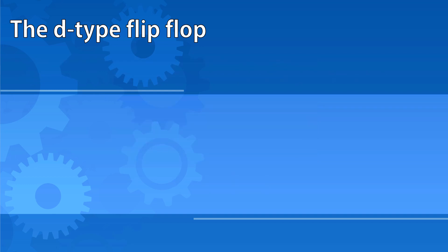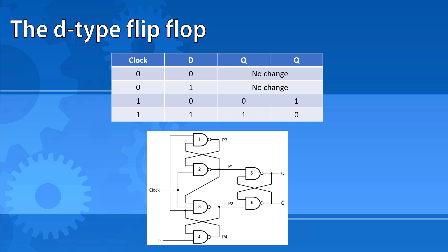The truth table for the D-type flip-flop is as shown here. If the clock is not on a rising edge, that is, it's at zero, then there will be no change regardless of where the control input is at.